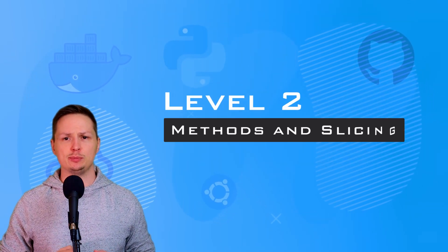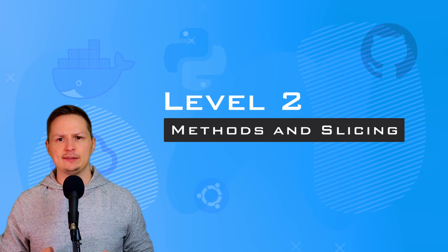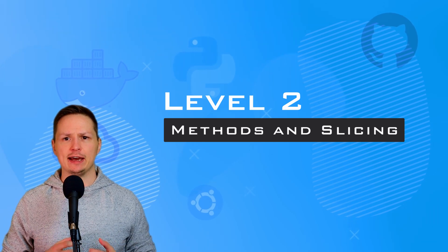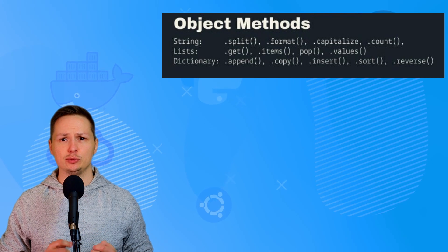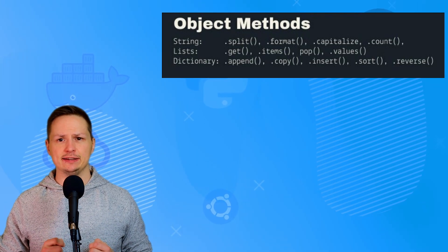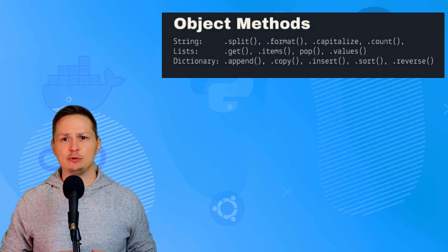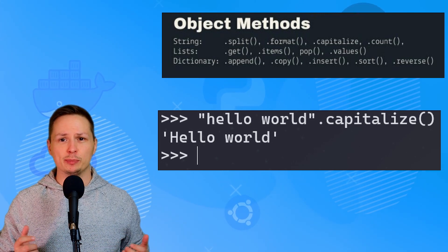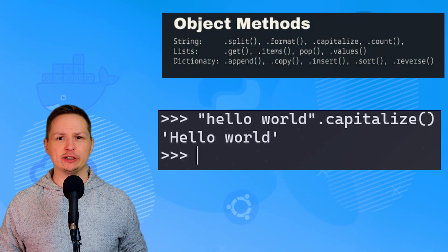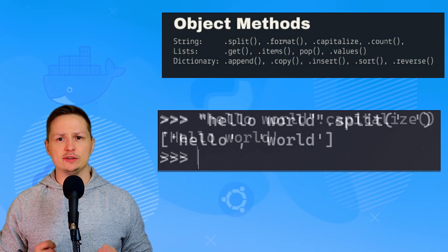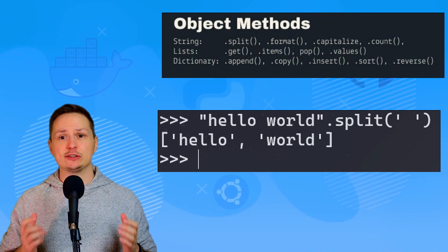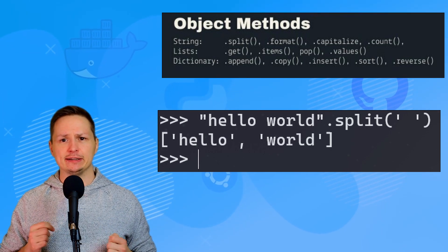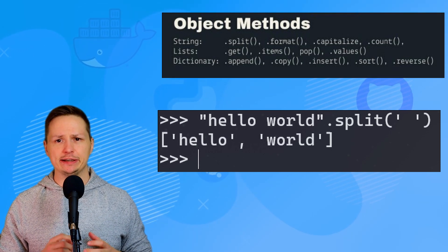Level two: at this point you should be able to build a basic Python script. Let's level up by talking about object methods. In Python, everything is an object, and these objects have methods you can use. Common methods to learn are string methods, list methods, and dictionary methods. For example, the 'capitalize' string method capitalizes the first letter. A more powerful method is 'split', which splits a string into a list — very useful when data comes in as a string but needs to be iterated like a list.